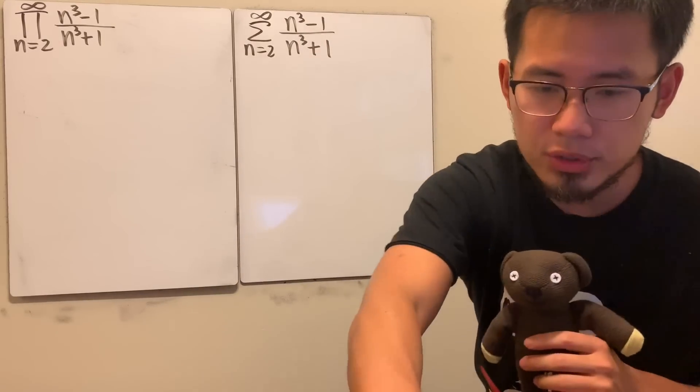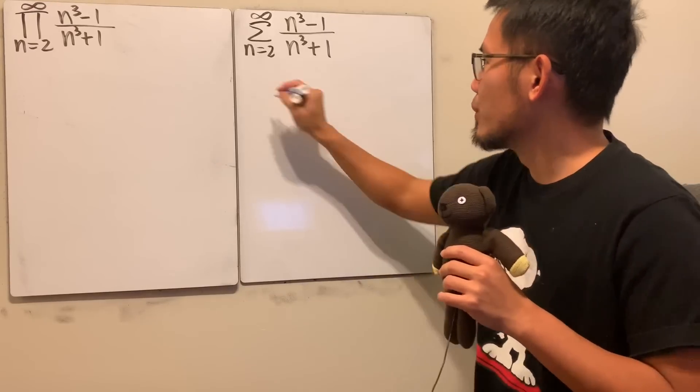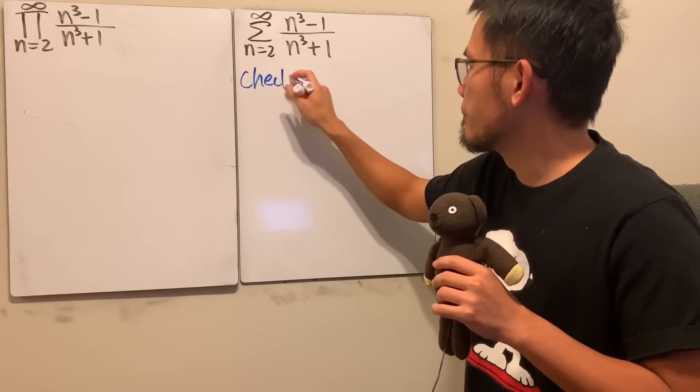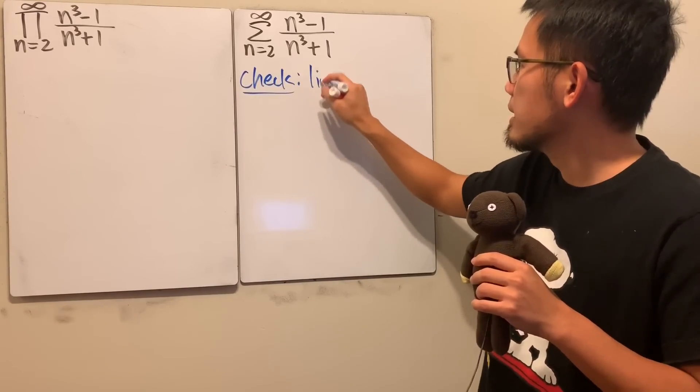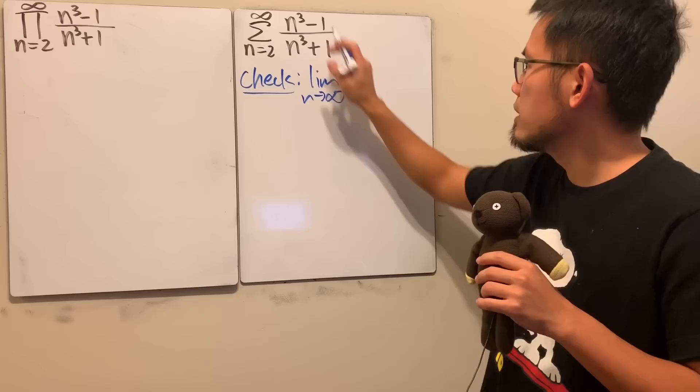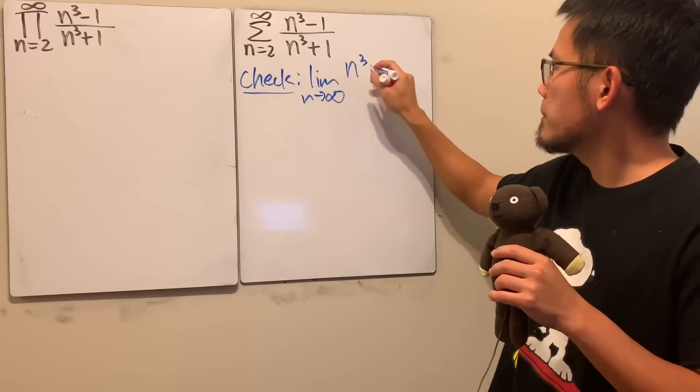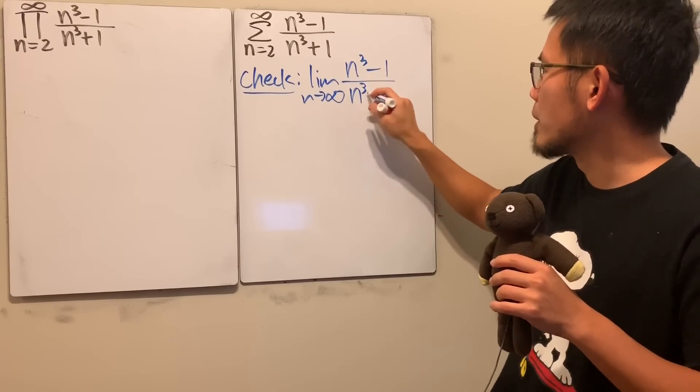Right here I will actually start with the blue marker. So here, let's do the check. We see that if we take the limit as n goes to infinity of just this, n to the third power minus 1 over n to the third power plus 1.